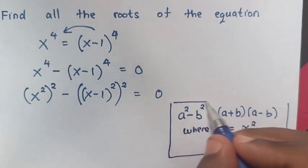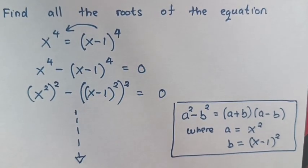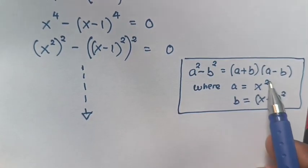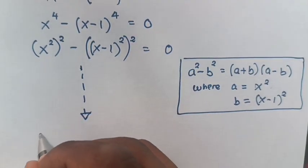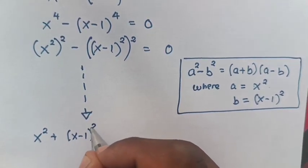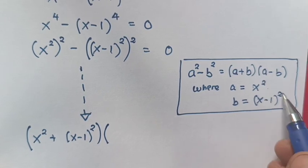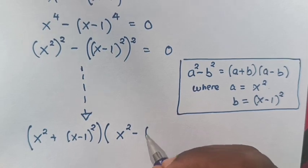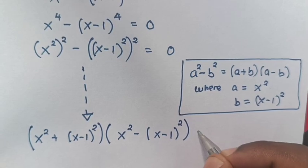When we substitute the values of a and b into our rule, it will be x squared plus x minus 1 bracket squared, times x squared minus x minus 1 bracket squared, is equals to 0.